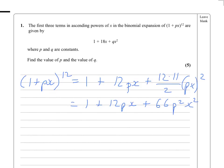Now we know that in the expansion it's 1 plus 18x plus qx squared, so that tells us that 12p must equal 18, and therefore p equals 3 over 2.